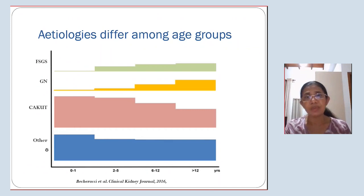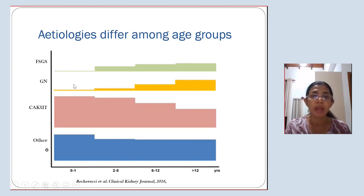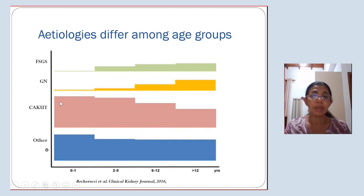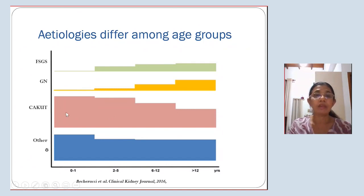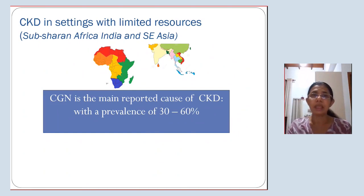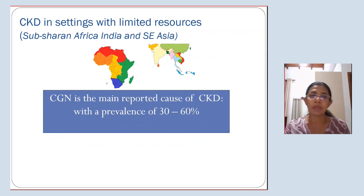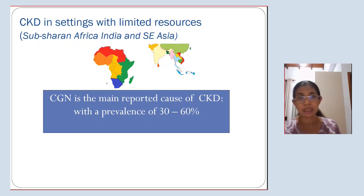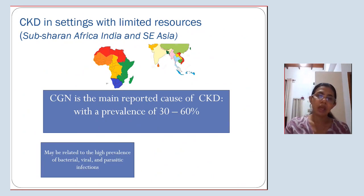Etiologies also differ among age groups. Glomerulopathies including FSGS and other chronic glomerulopathies exist in small numbers in young children, but their prevalences progressively increase during the adolescent age group. CAKUT is a major cause during early childhood, but its prevalence declines with age; however, CAKUT still exerts a major impact throughout childhood. The etiologies of CKD can also vary across countries and regions.